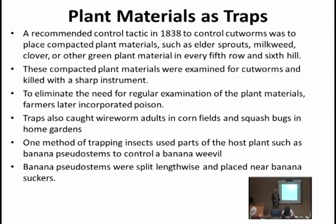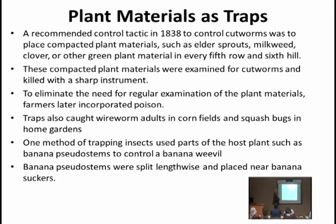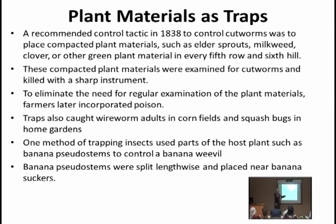Plant material traps: تستخدم نباتاً تعرف أنه يجذب نوعاً من الحشرات، ووجود هذه الحشرة سيؤدي لوجود أعداء حيوية طبيعية في المنطقة. تُستخدم كـ trap plant والنبات هو المصيدة. منذ عام 1888 كانت التوصية باستخدام مواد نباتية مثل رشوح الأب‍رز (elder sprout)، والقمح والملابس الخضراء في كل خامس صف، لجذب القارضات (cutworms) وهي ممارسات زراعية سابقة لاختراع المبيدات الكيميائية.